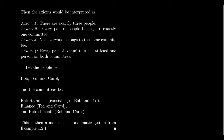Because the theorems of an axiomatic system are logical consequences of the axioms and are independent of interpretation, all theorems of an axiomatic system are necessarily true for every model. This is the real strength of the axiomatic method. The four theorems we proved about fee-foe theory must be true for the interpretation — the model — we see here with Bob, Ted, Carol, and the entertainment, finance, and refreshment committees.